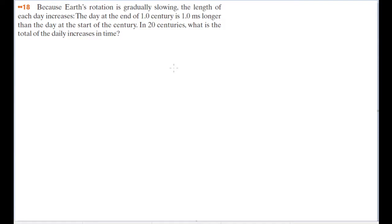Students could read this and misinterpret the question as more simply asking, how much longer will the day at the end of 20 centuries be than the day today? And it's true, finding that out will help us. But what the question actually means by 'what is the total of the daily increases in time' is: if we took the additional time we're gaining at the end of each day and added up that additional time that accumulates over every single day from now until 20 centuries from now, what will the sum of all those tiny additions in time be?